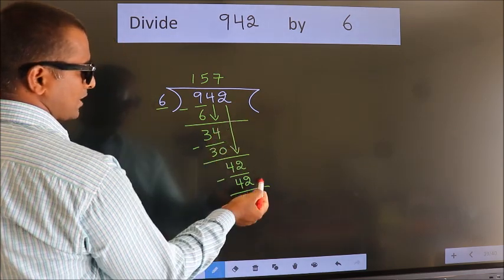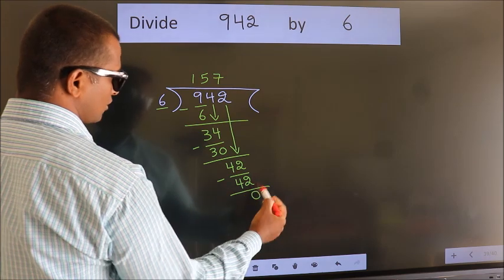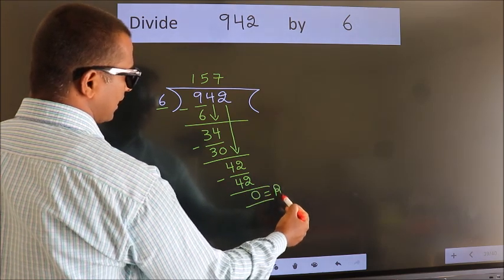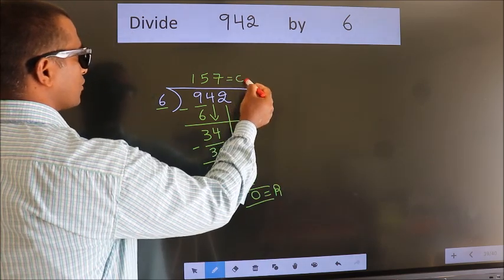No more numbers to bring it down. So we stop here. This is our remainder. This is our quotient.